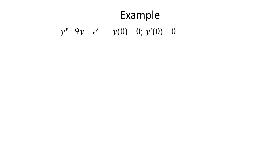Let's do an example. We have y double prime plus 9y equals e to the t, with initial conditions y(0) equals 0 and y prime(0) equals 0. To solve this initial value problem, we take the Laplace transform of each term: the Laplace transform of y double prime plus 9 times the Laplace transform of y equals the Laplace transform of e to the t.